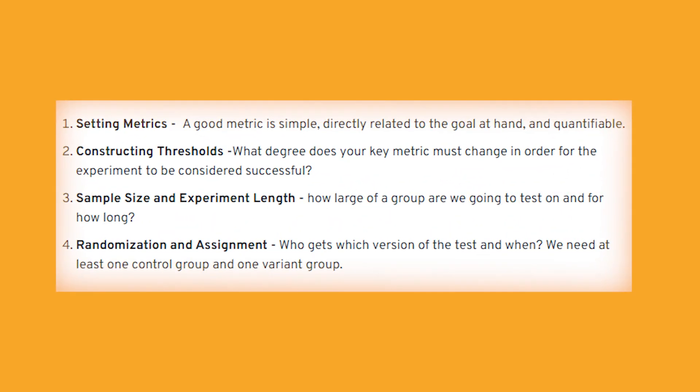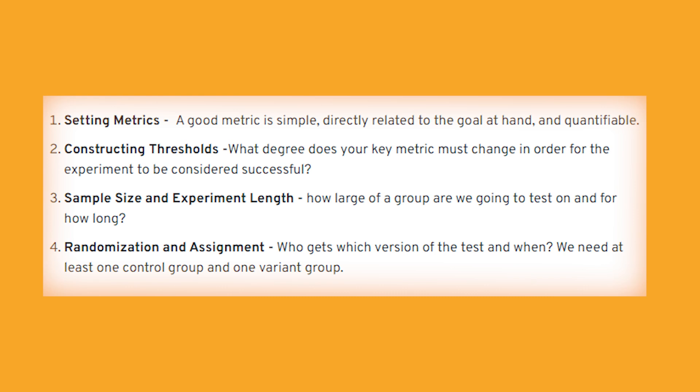The A/B testing framework has four steps. One: set metrics — a good metric is simple and directly related to the goal at hand. Two: construct thresholds — what degree does your key metric have to change for the experiment to be considered successful? Three: determine sample size and experiment length — how large a group and for how long? Four: randomization and assignment — who gets which version, when, with at least one control group and one variant group.